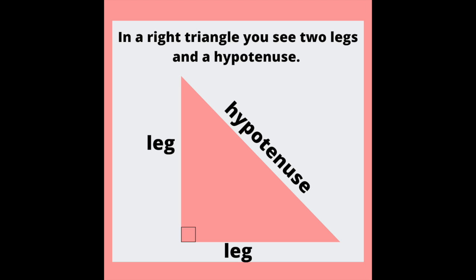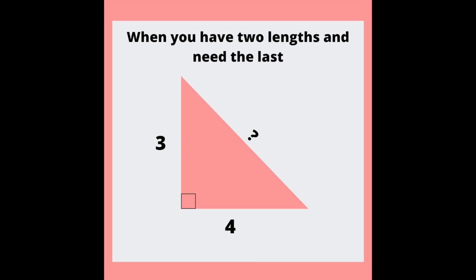In a right triangle, you see two legs and a hypotenuse. When you have two lengths and you need the last, the Pythagorean theorem gives it fast.